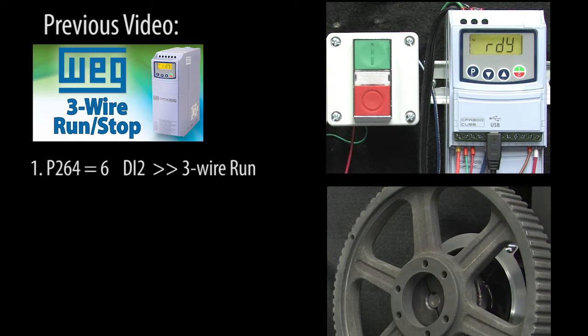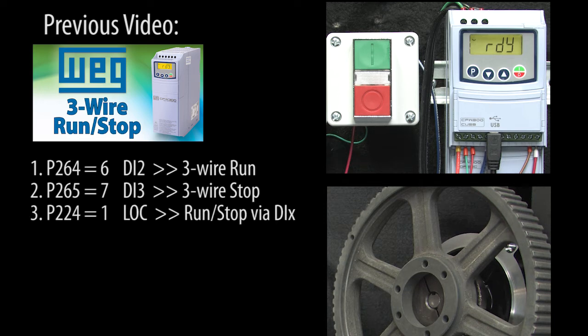In that video, we told digital input 2 to be the 3-wire run, digital input 3 to be the 3-wire stop, and we set the local run stop to be controlled by these digital inputs.